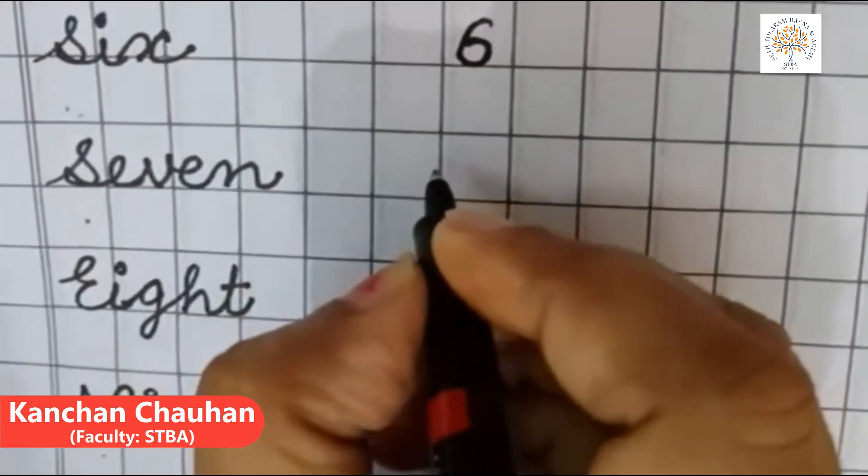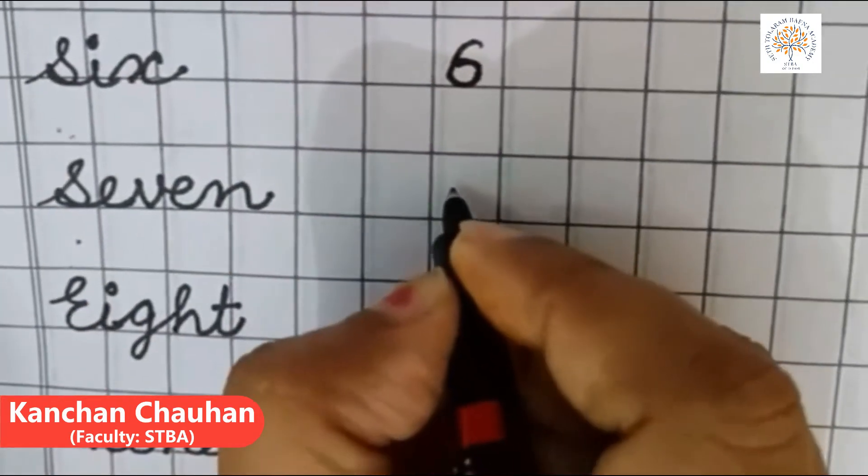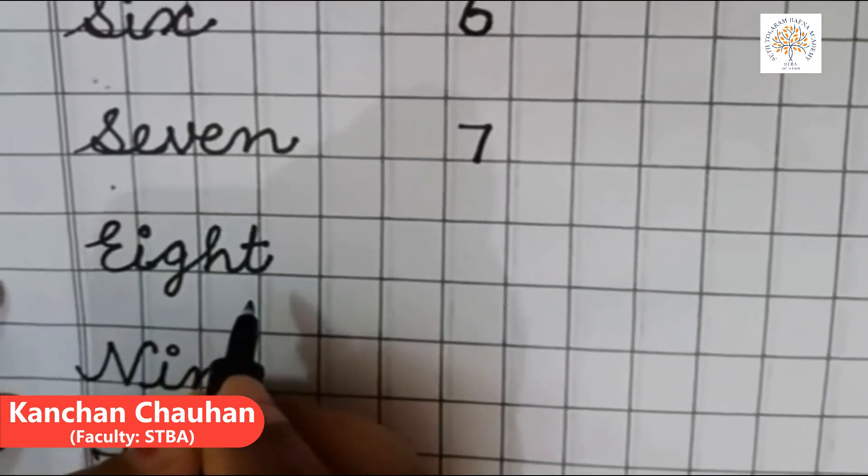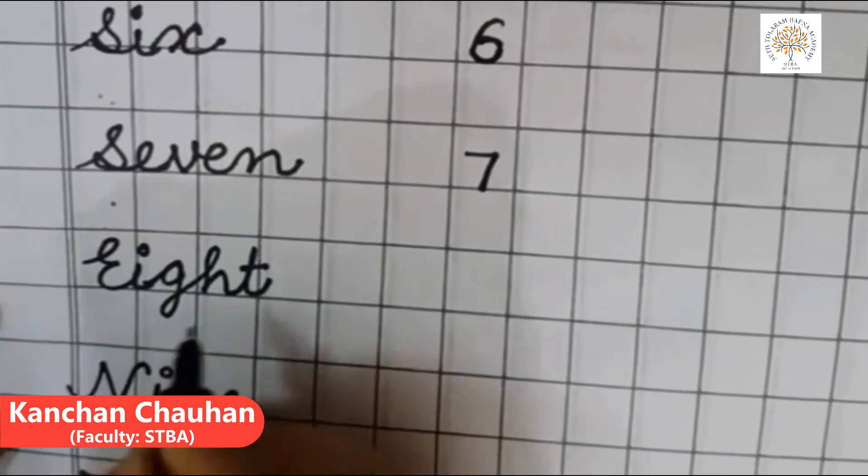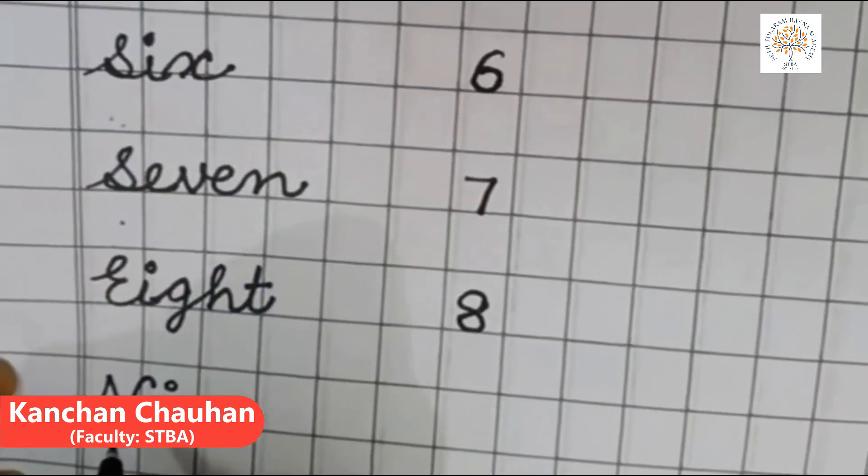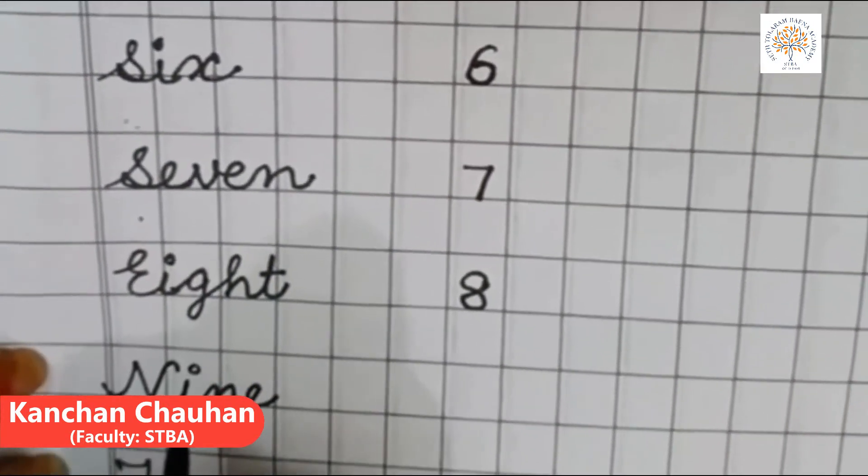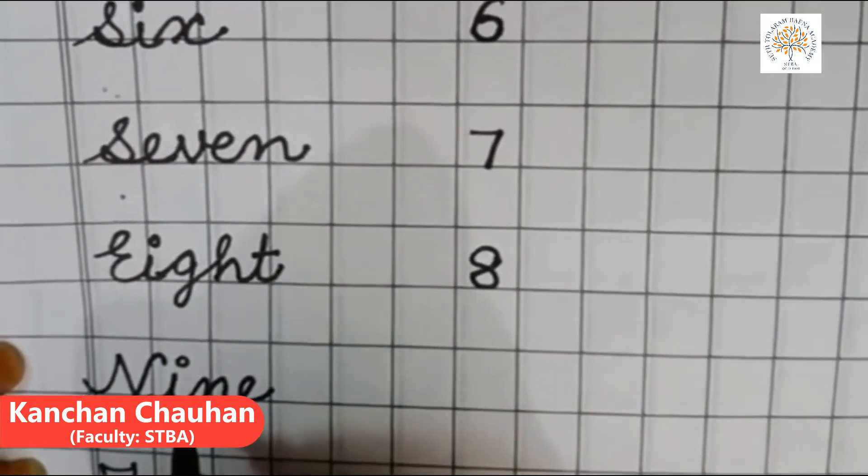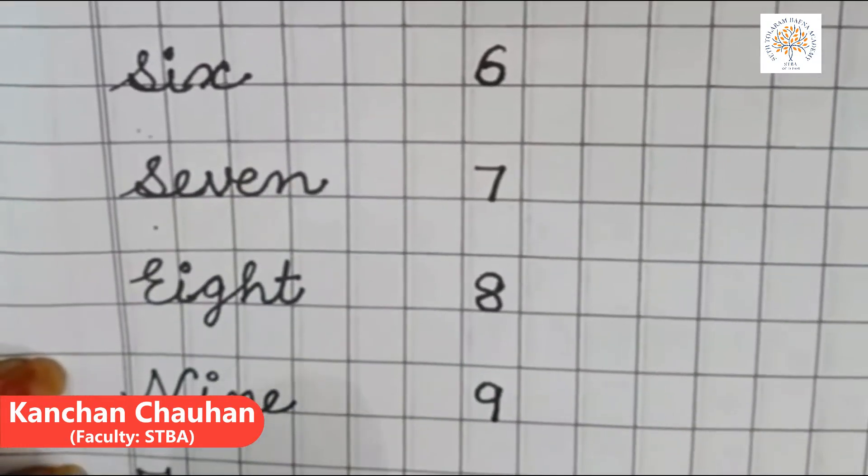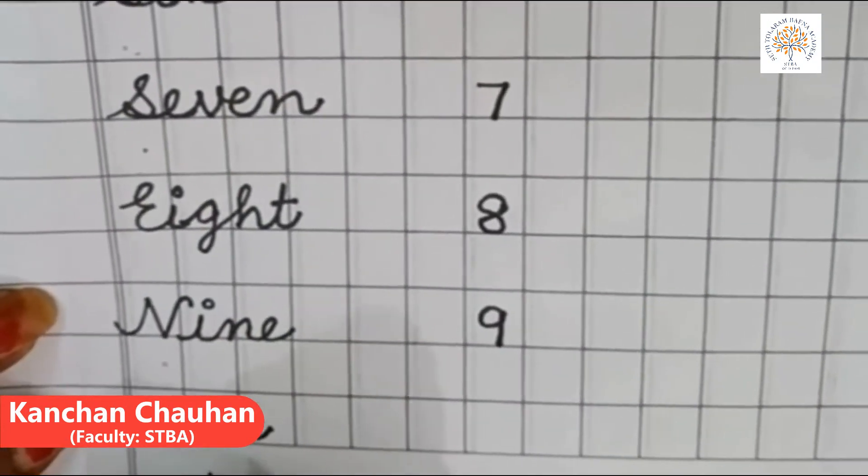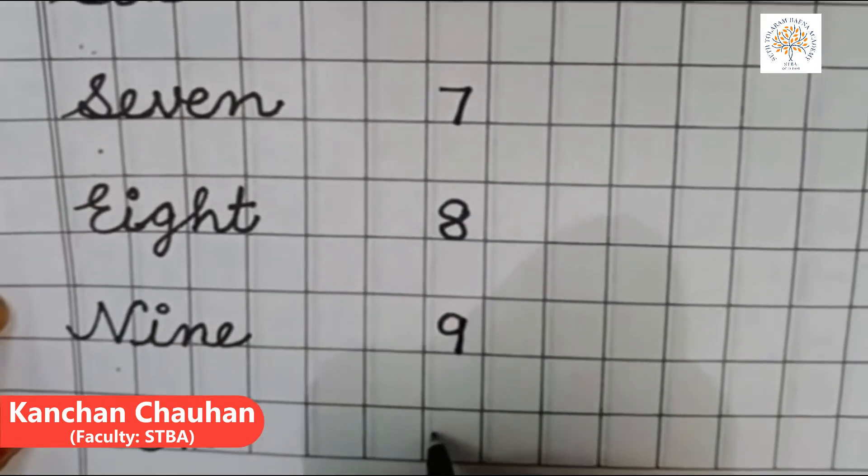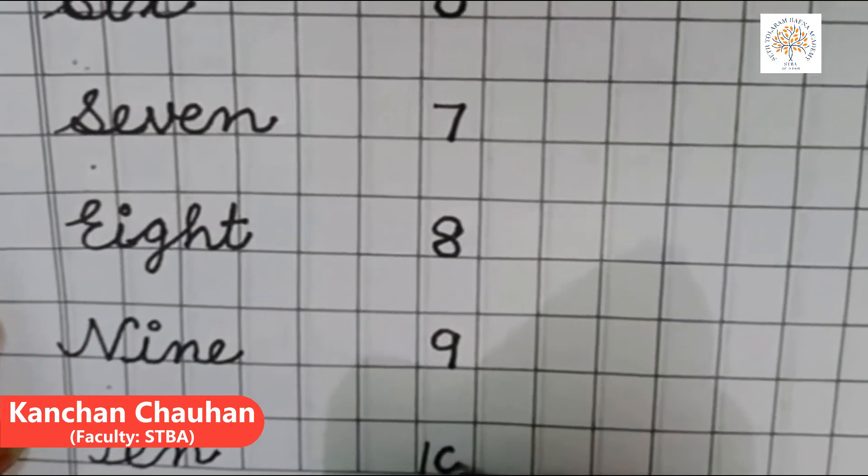6 S-I-X-6 and this is numeral 6. S-E-V-E-N-7 and numeral for number name 7 is this. E-I-G-H-T-8 and numeral for 8 is this. Number name 9 N-I-N-E-9 and numeral for number name 9 is 9. This is number name T-E-N-10 and numeral for number name 10 is 1-0-10.